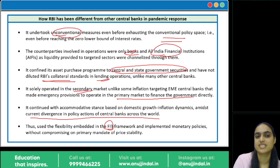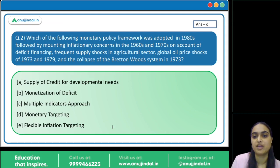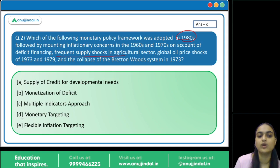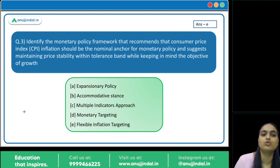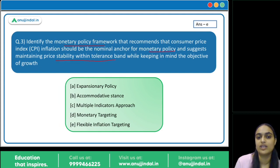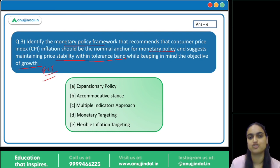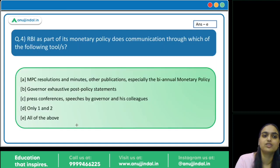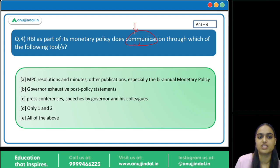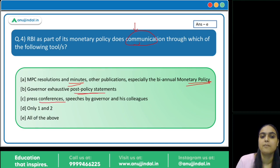Now let's discuss the remaining questions. Question 2: which monetary policy framework was adopted in the 1980s following inflationary concerns of the 60s and 70s? The answer is the monetary targeting framework. Question 3: identify the monetary policy framework that recommends CPI as the nominal anchor for monetary policy and suggests price stability within a tolerable band keeping in mind the objective of growth. This is the Flexible Inflation Targeting system — option E is the answer. Question 4: RBI as part of monetary policy communicates through which tools? All three — monetary policy report and MPC minutes, RBI policy statements, and press conferences and governor speeches — are correct. Answer is option E.